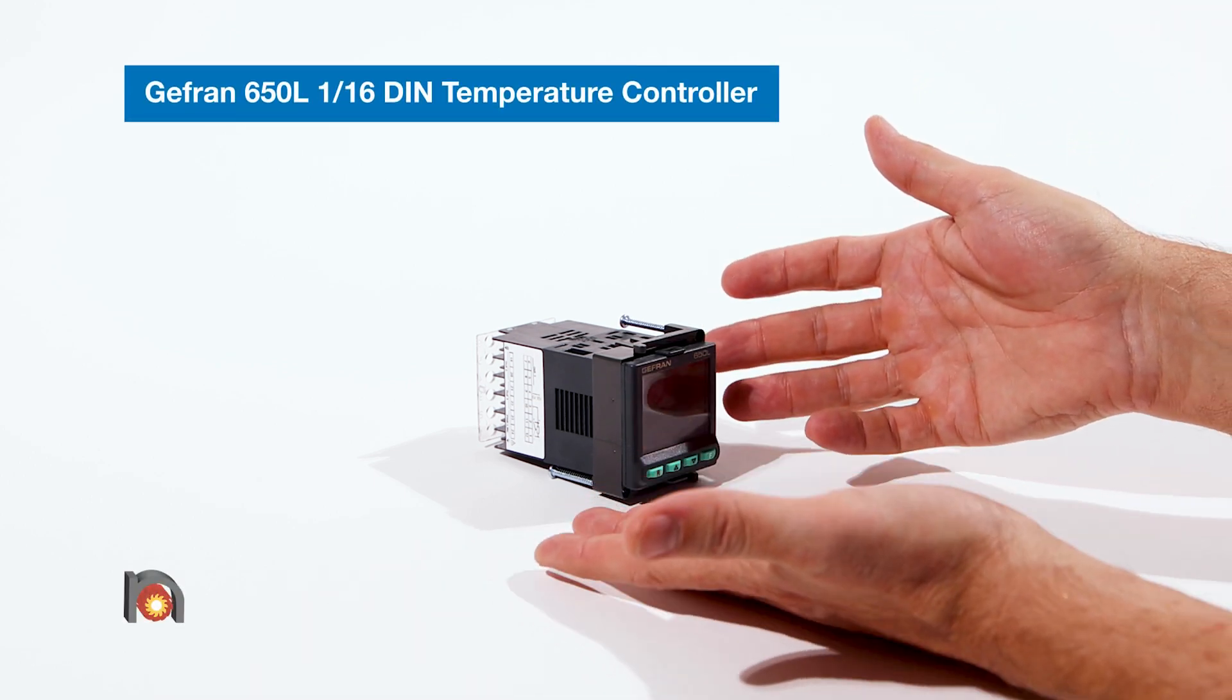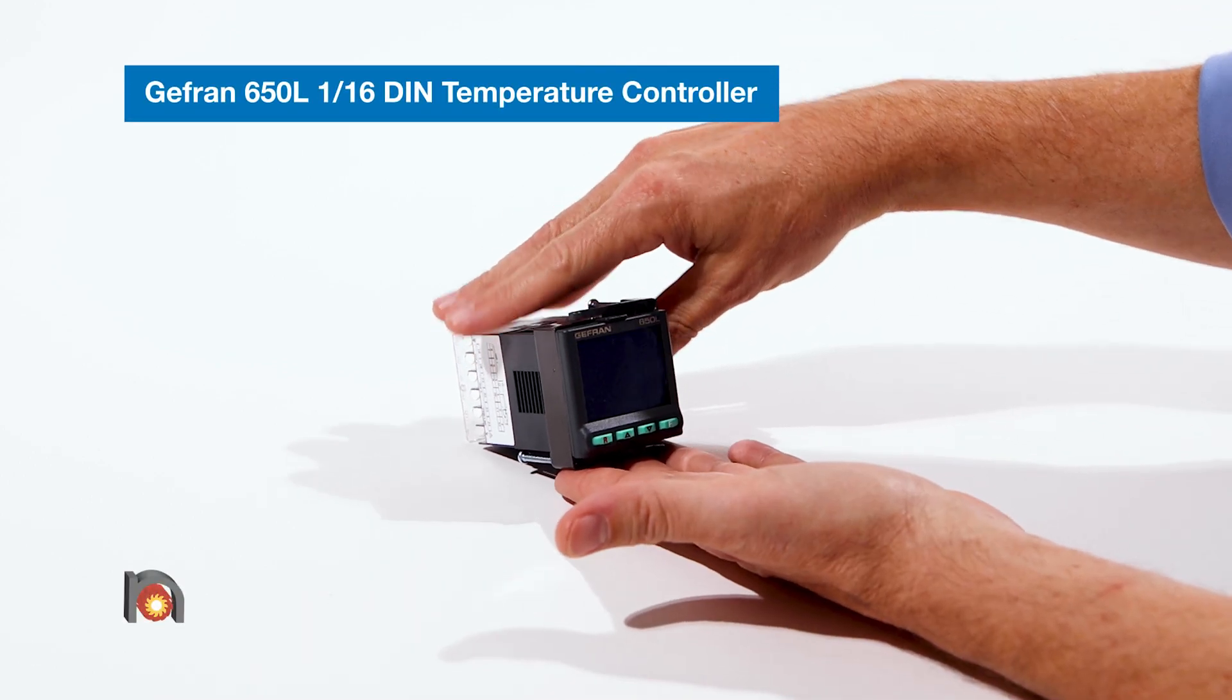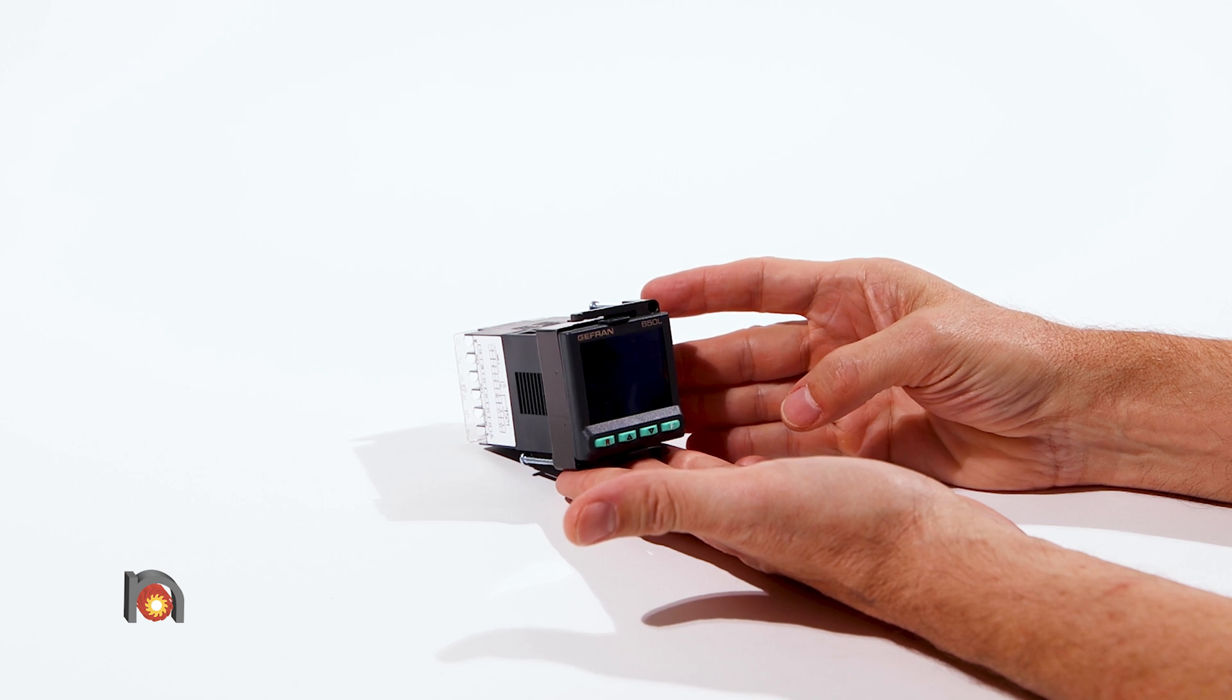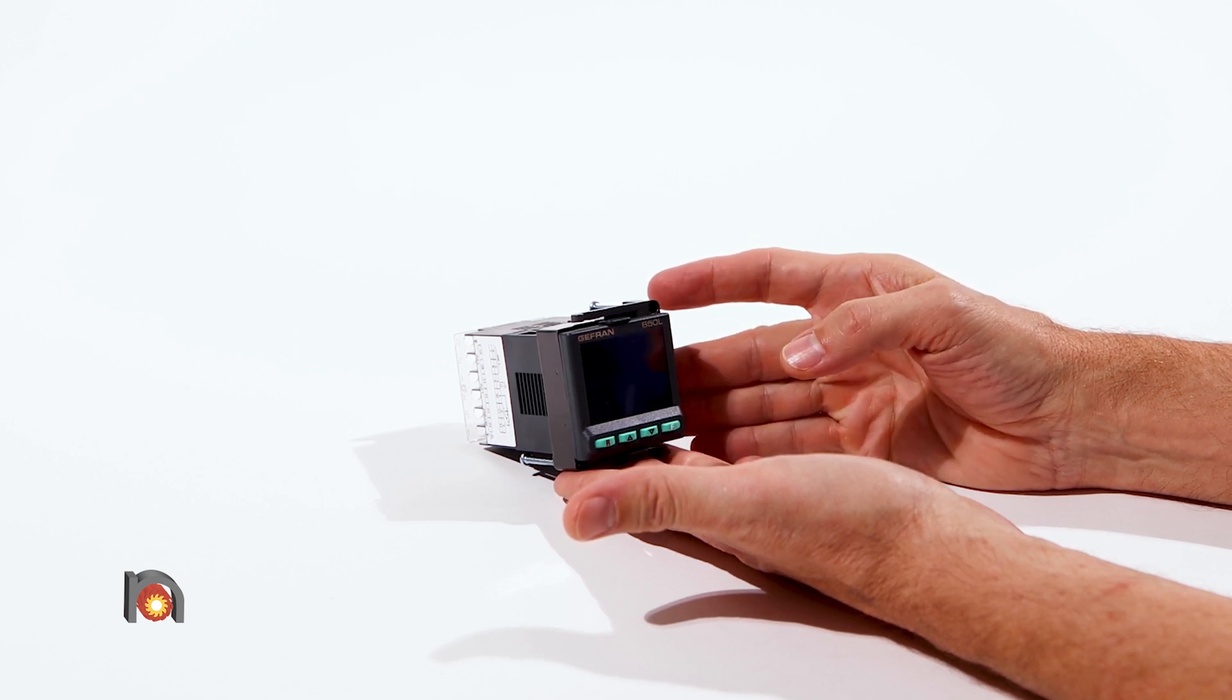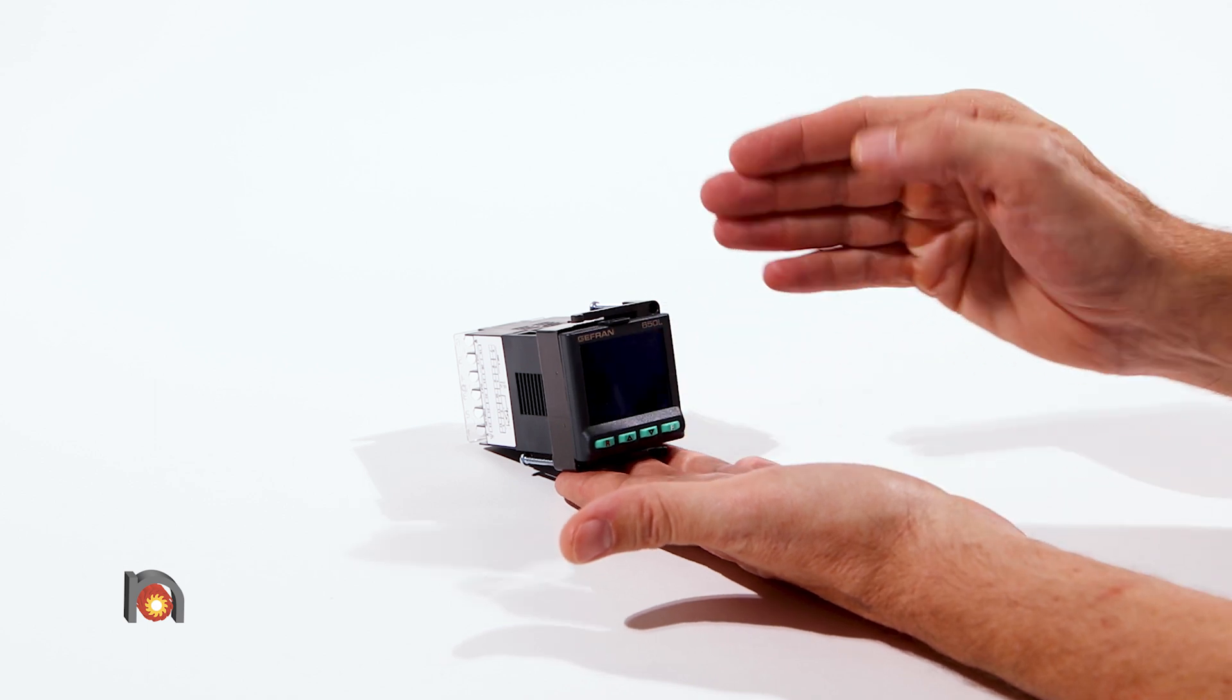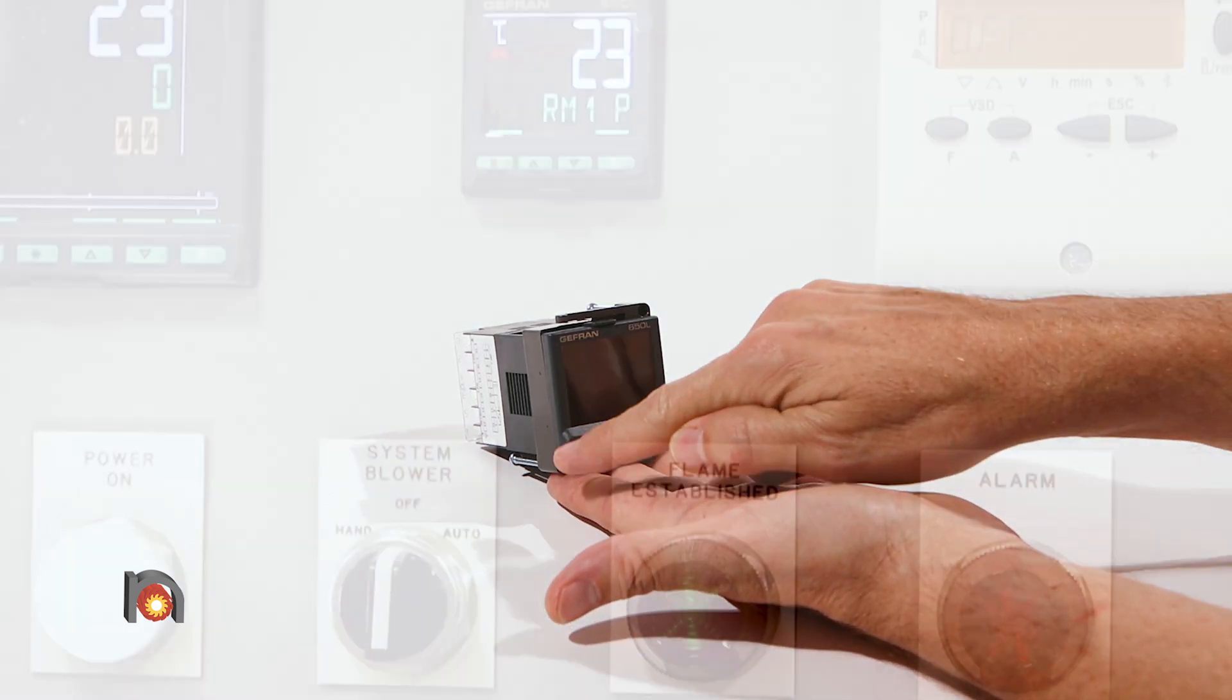This is the Jeffran 650L 16th DIN temperature controller. It is a high limit controller requiring manual operator acknowledgement through a dedicated frontal button for alarm reset.